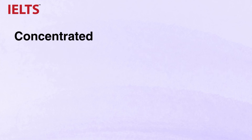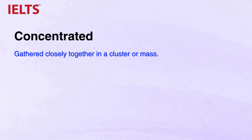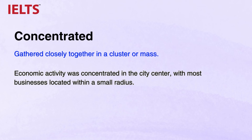And there is CONCENTRATED, meaning gathered closely together in a cluster or mass. Economic activity was concentrated in the city center, with most businesses located within a small radius. Use this adjective to describe areas where features are closely grouped together, such as concentrated industrial zones or concentrated commercial districts.